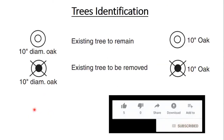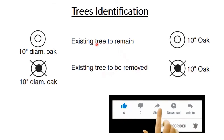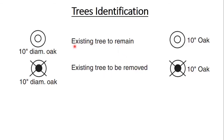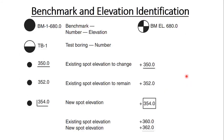Next we have tree identification. In every project you have some trees, and you want to remove some while keeping others. If you want to keep an existing tree, you use one symbol and can note the size, for example, 10-inch diameter oak. If you want to remove existing trees, you use a different symbol on the project site plan.